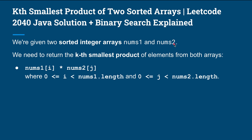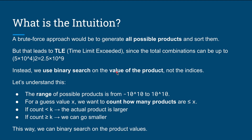To restate: we have two sorted integer arrays nums1 and nums2, and we need to return the kth smallest product of elements from both arrays — nums1[i] multiplied by nums2[j]. We multiply each element from one array to corresponding elements of the other to get the kth smallest product.